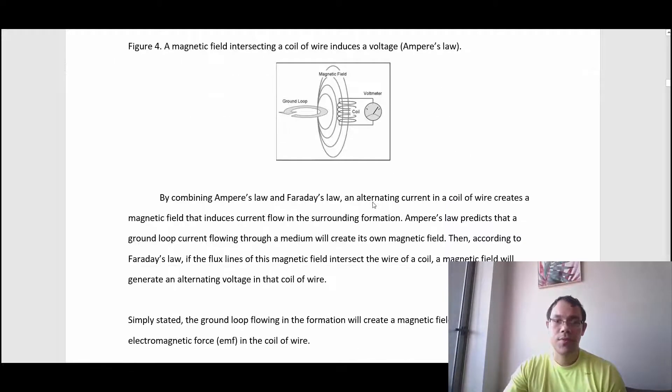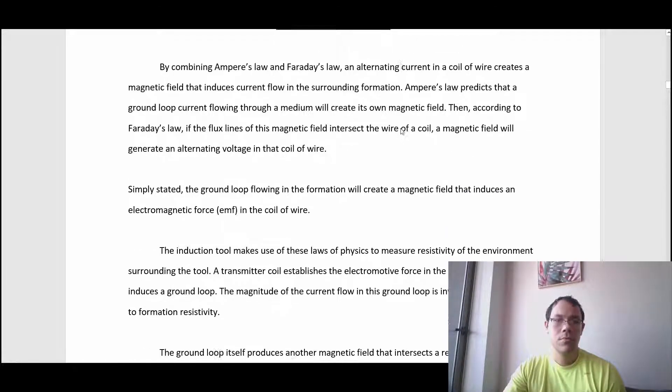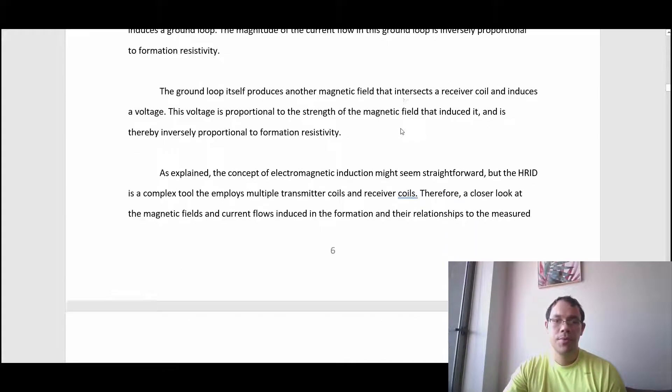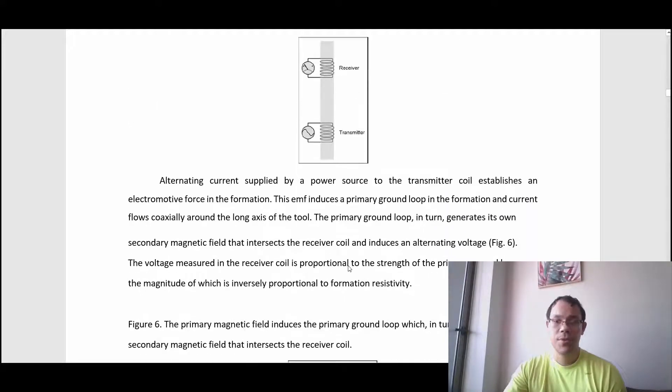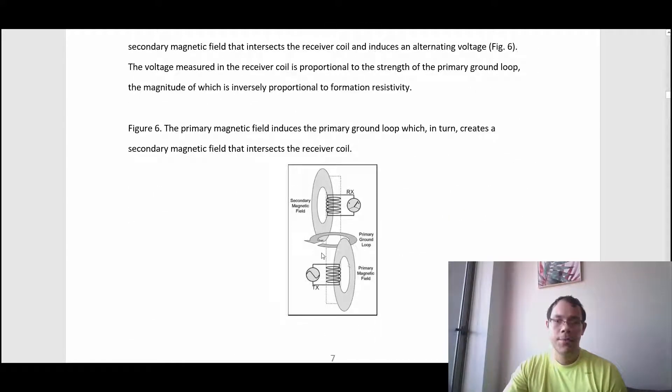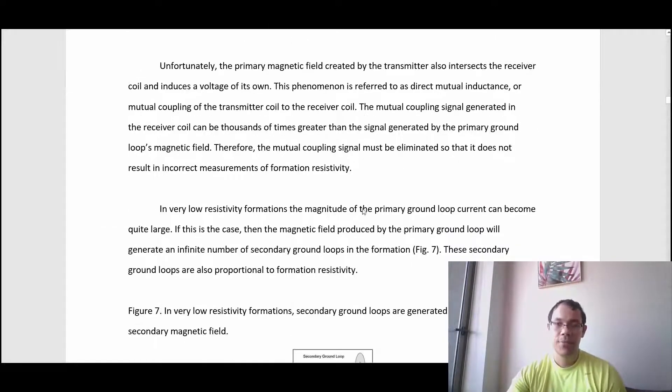Then at your receiver, which is another coil, that ground loop is going to induce a voltage in the receiver, and you will be measuring voltage. This is according to Ampere's law. So you combine both Ampere's and Faraday's laws. In this simple example, there's one transmitter and one receiver. You apply your current, this is the primary magnetic field, creates the primary ground loop, which through a secondary magnetic field induces a voltage.